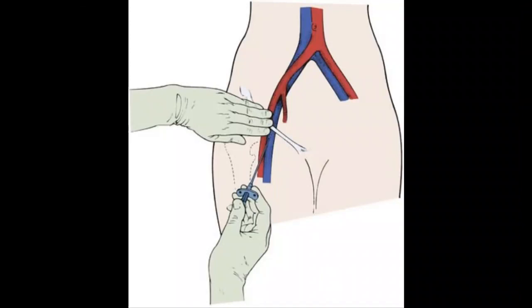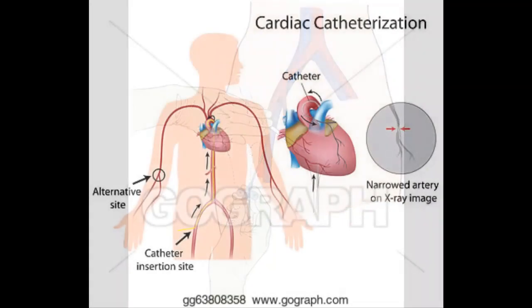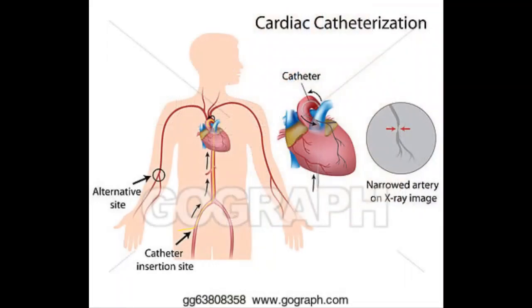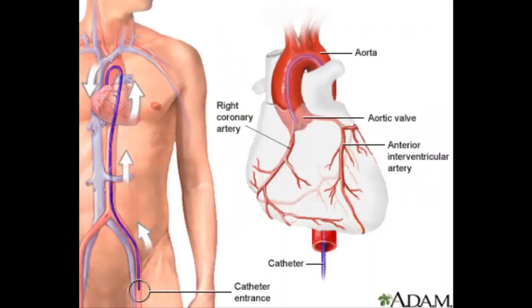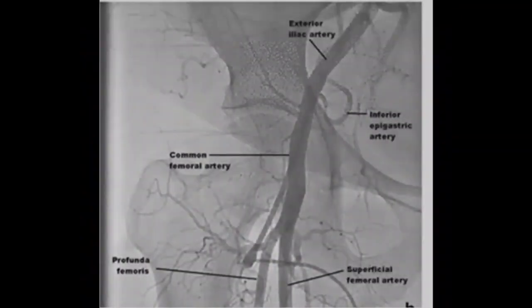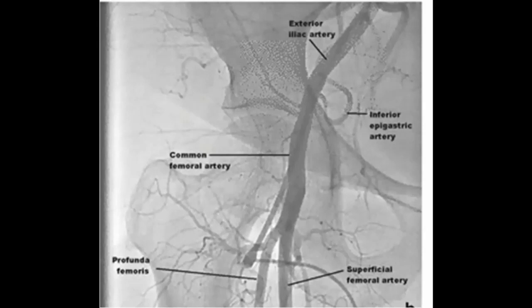Access to the femoral artery is straightforward due to its superficial location within the femoral triangle, making it suitable for a range of clinical procedures. One example is coronary angiography, in which the femoral artery is catheterized with a long thin tube. This tube is navigated up the external iliac artery, common iliac artery, and aorta, and into the coronary vessels. A radio-opaque dye is then injected into the coronary vessels to view any wall thickening or blockages via x-ray.